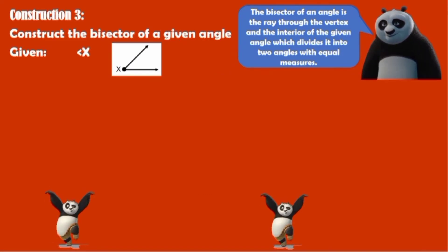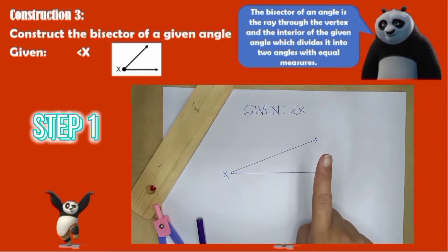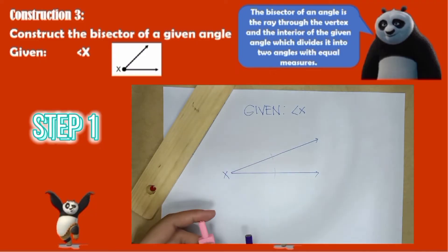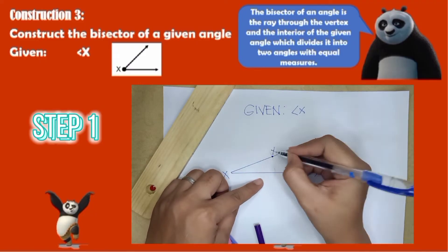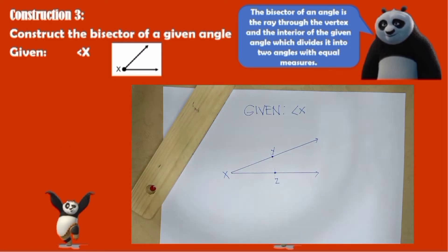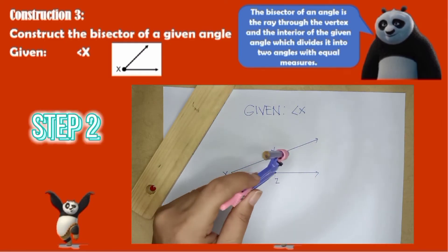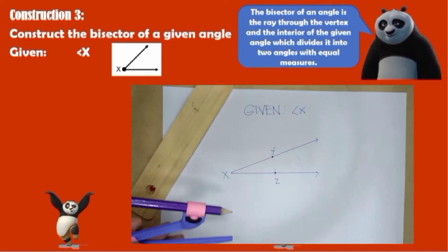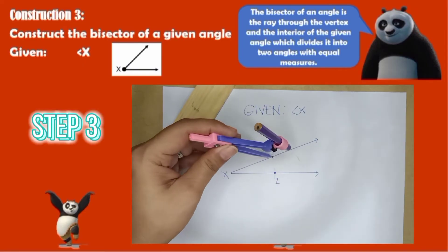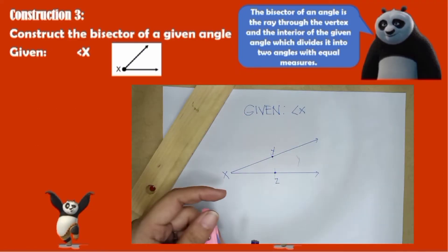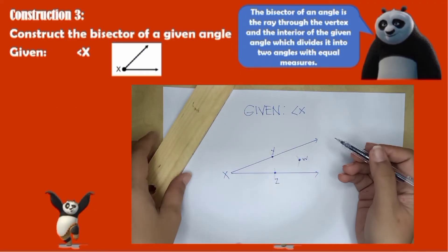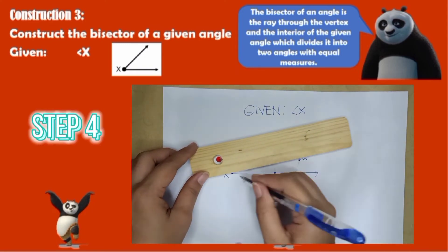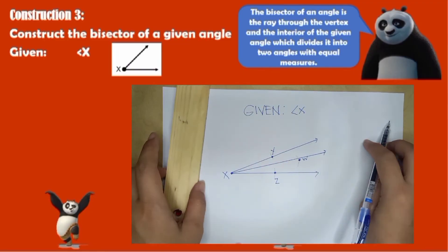Now I will show you the actual construction. Step 1: Place points Y and Z on both sides of angle X respectively. Step 2: Using Z as the center and any radius, draw an arc of a circle. Step 3: Do the same using point Y as center and mark the intersection as point W. Step 4: Draw ray XW, which is the bisector of angle YXZ.